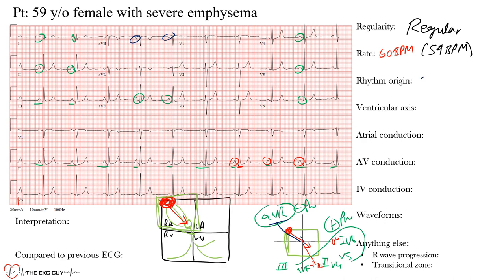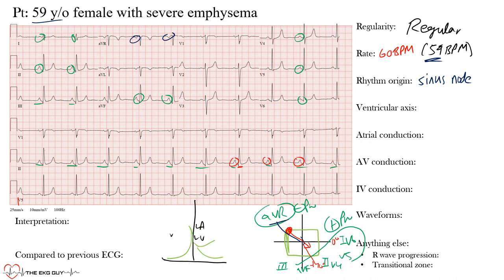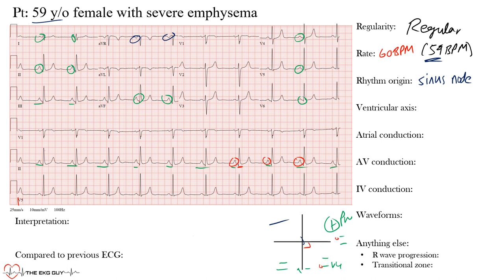In fact, we do have a rhythm originating from the sinus node — sinus rhythm — at a rate of 59 beats per minute. Moving on to the ventricular axis: there is also a QRS axis, or ventricular axis. The ST segment and T-wave also have axes, but here we'll focus on the QRS complex.